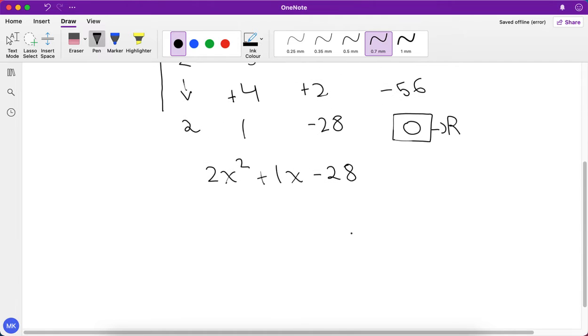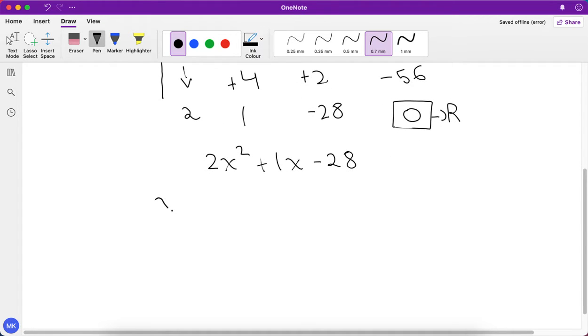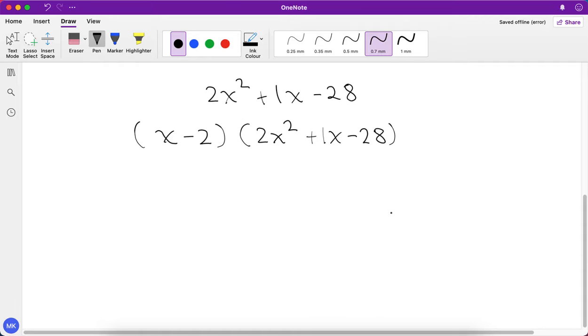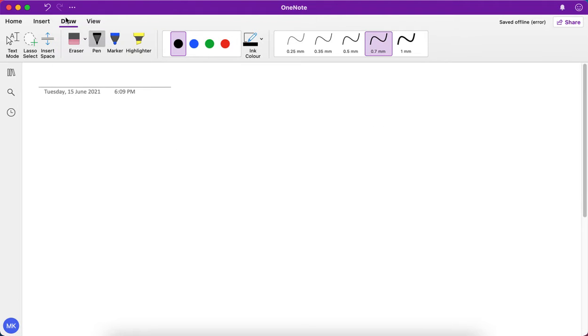So now we had x - 2 in the start, so the product of the linear and quadratic factor will be (x - 2)(2x² + 1x - 28). So now if we move on to another question.